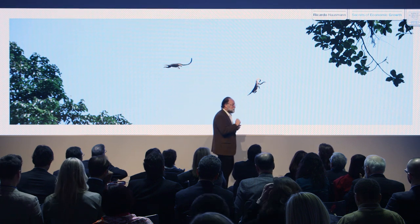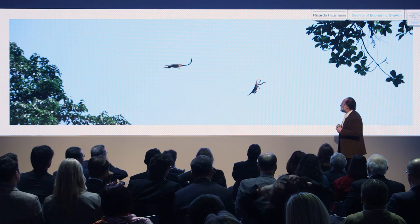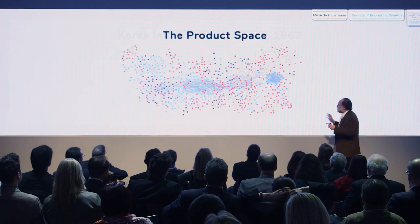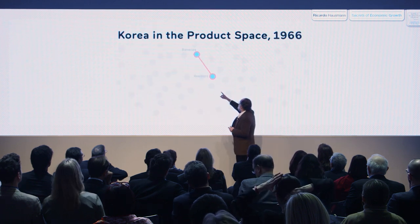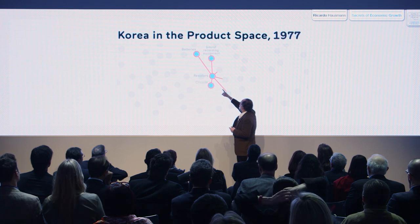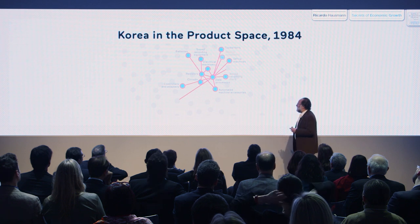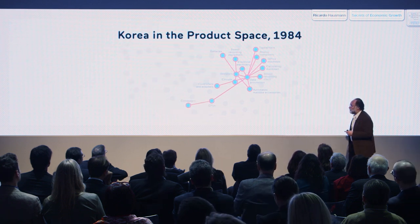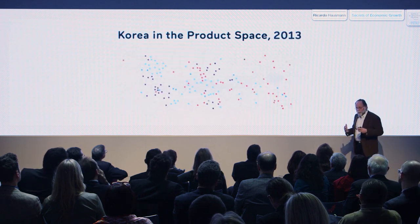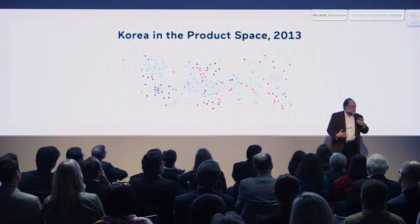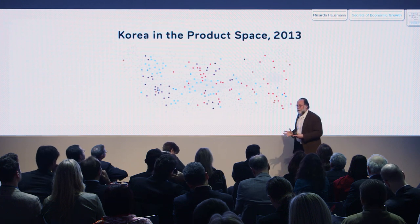Let's see how monkeys populate the forest — and for that I'll tell you the story of Korea. This is Korea in 1962 in the product space. Korea suddenly developed batteries, then moved to develop other products, then those other products, and from there it went on to develop CPUs and computers. The monkeys were populating the forest by jumping from where they were to other products that used more or less those letters but added some. That is how Korea ended up populating this space.